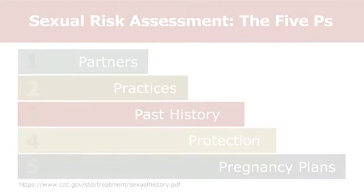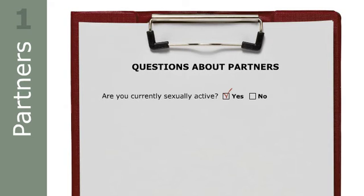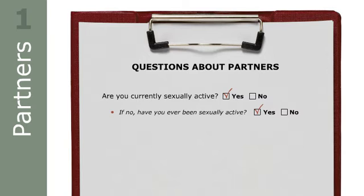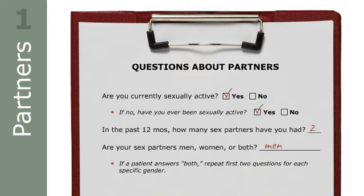You begin with the questions about partners. These questions are: Are you currently sexually active, or are you having sex? If the patient answers no, consider asking if he or she has ever been sexually active. In the past 12 months, how many sex partners have you had? Are your sex partners men, women, or both? If a patient answers both, repeat the first two questions for each specific gender.